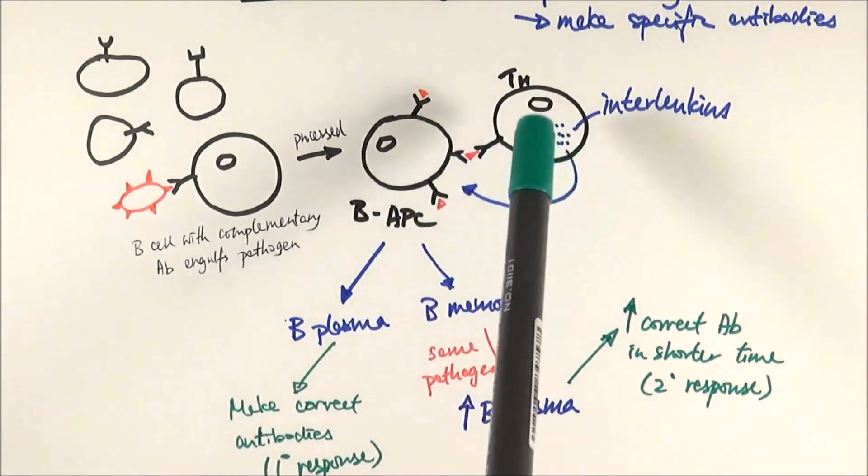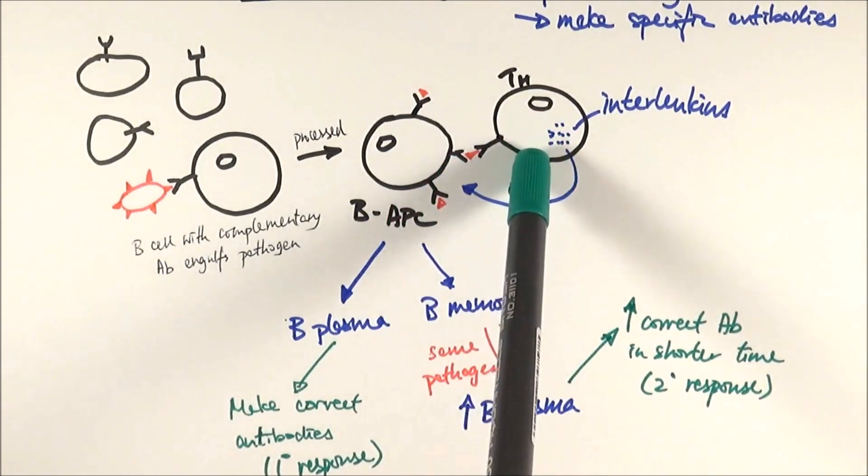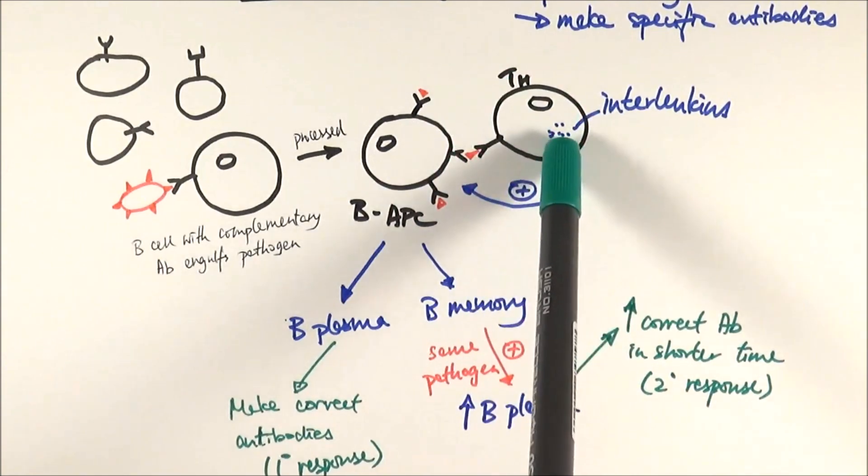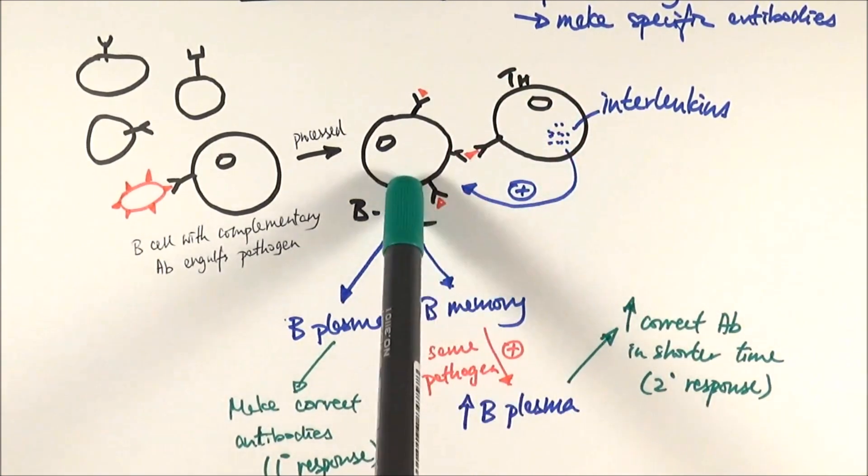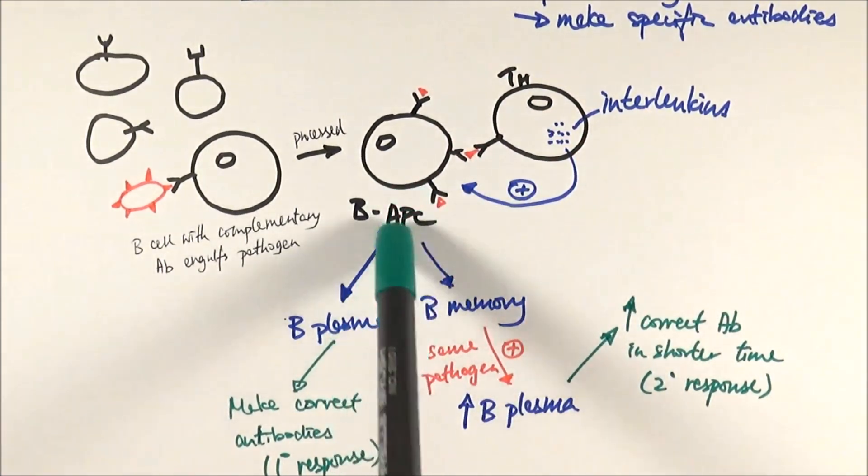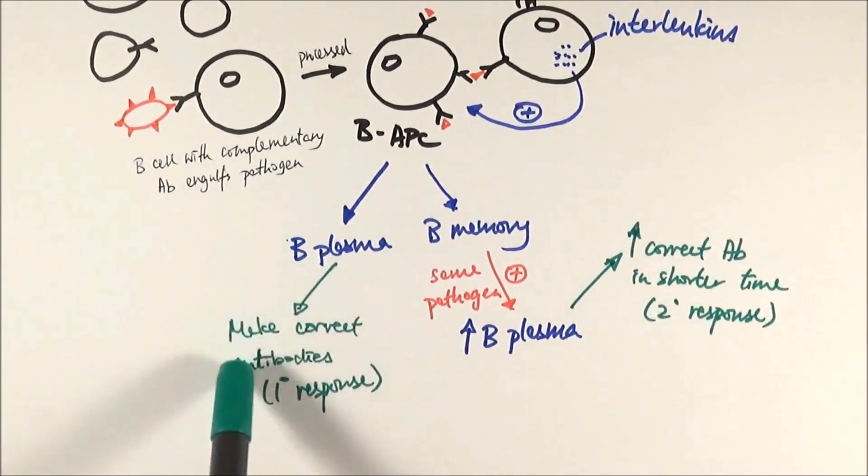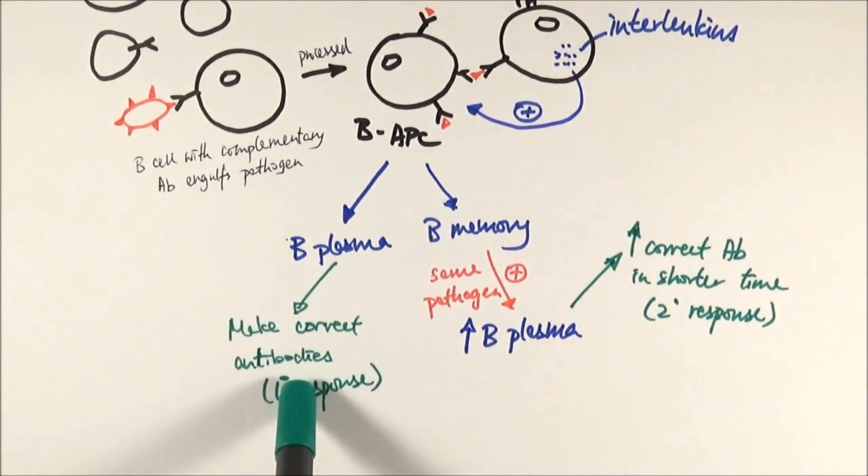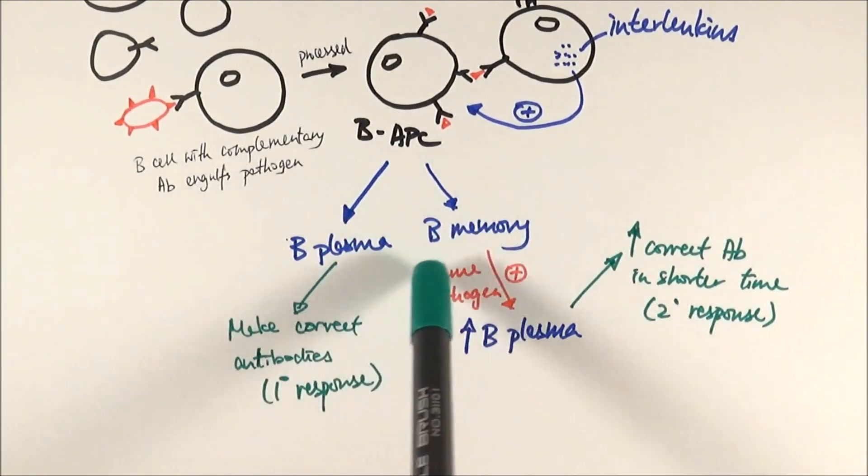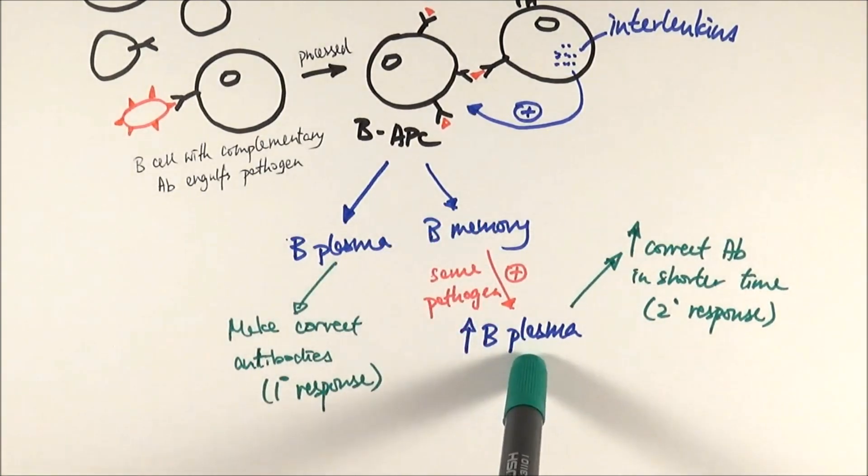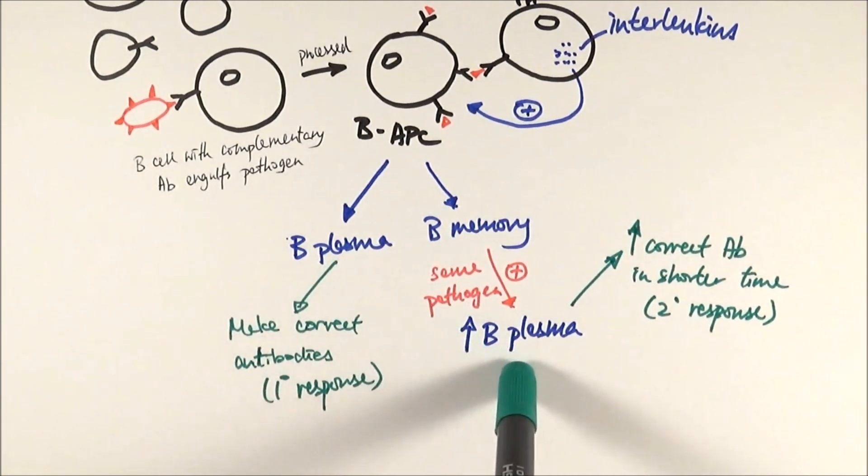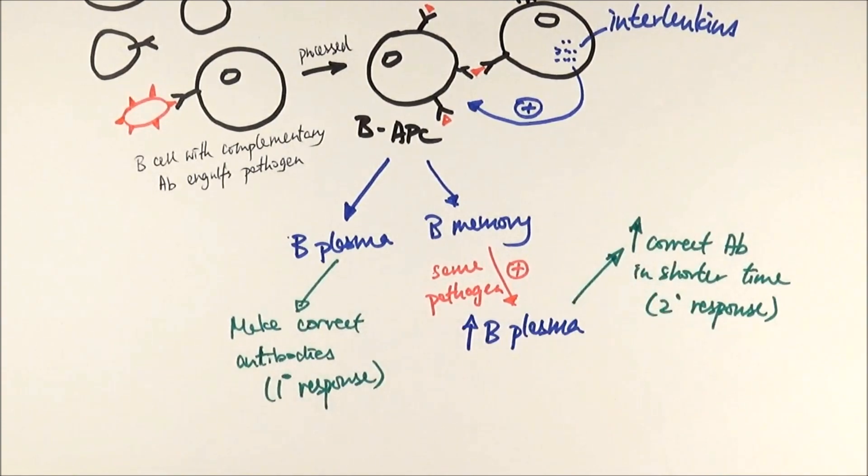After that, it will get recognized by the T helper cells and activates it. And then the activated T helper cells release interleukins to signal the B antigen presenting cell to do further things. So it will proliferate into making B plasma cells to make lots and lots of the antibodies to kill the pathogen. And it can also make B memory cells so that in the future, if we get the same pathogen attacking, we can respond to it very quickly.